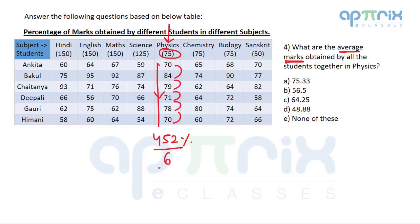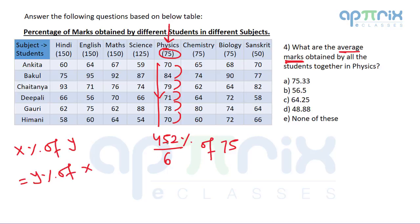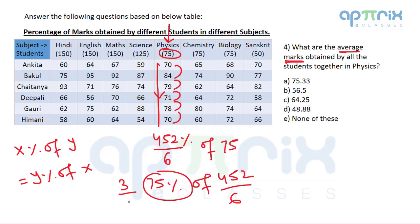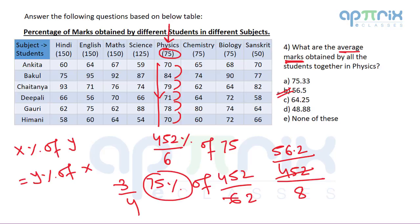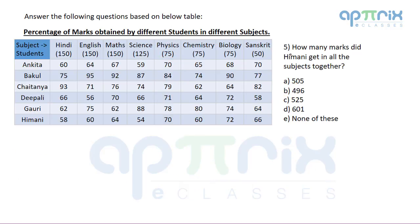Dividing by 6 gives the average percentage as 452/6 % of base 75. Using the property that x% of y = y% of x, we rewrite this as 75% of (452/6). Since 75% = 3/4, this becomes (3/4) × (452/6) = 452/8 = 56.5. So the average marks scored by all students in Physics is 56.5.